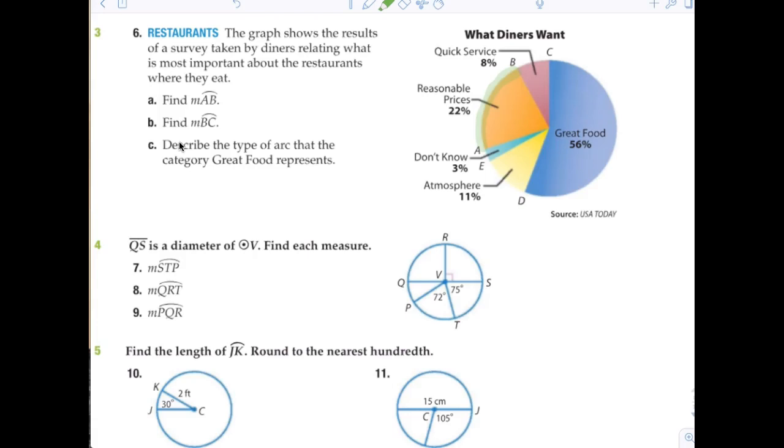So that is simply going to be 0.22 times 360. 79.2, right? Now, measure of B, C. B, C is just what? 8%, correct? And so now it's just 0.08 times 360. And we go ahead and say that's what? 28.8. 28.8 degrees. Now, it says describe the type of arc that the category great food represents. So that would just be major.